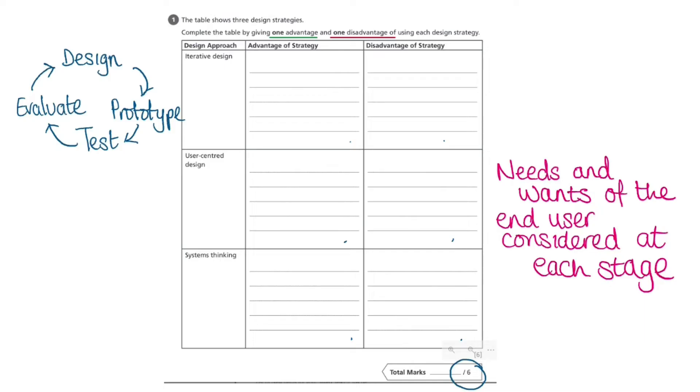User-centered design, however, really focuses on the needs and wants of the end user and they are considered at every stage of the process. For instance, the users may be asked to give feedback several times on design ideas and be asked to test prototypes. They may be involved in focus groups, surveys, or individual interviews.